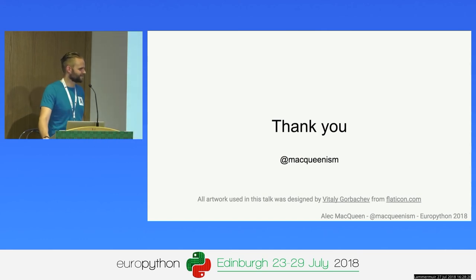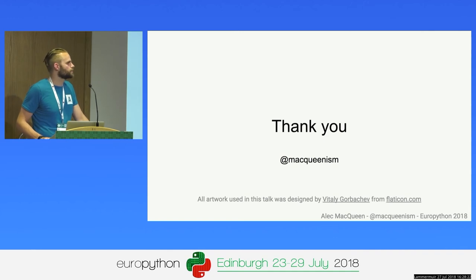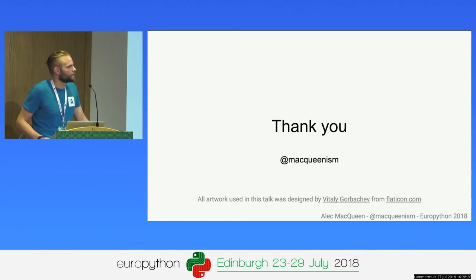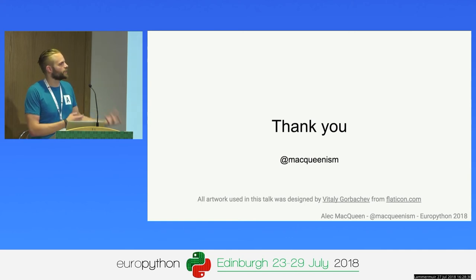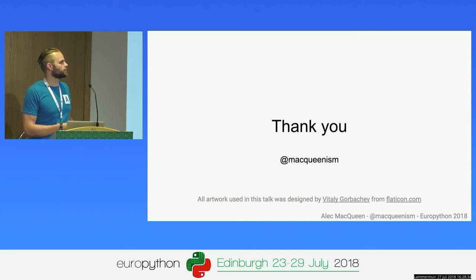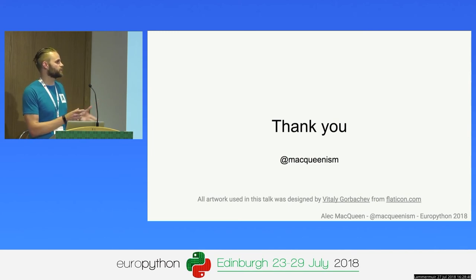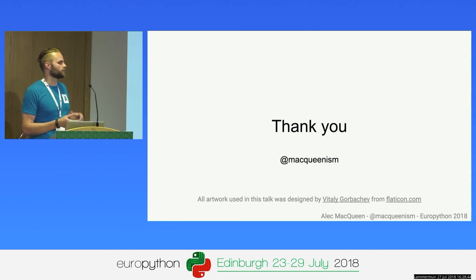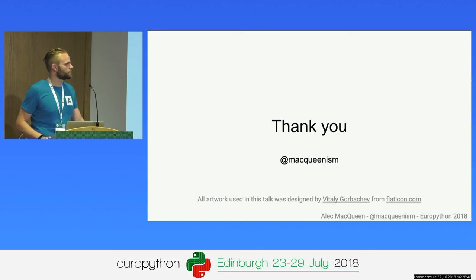Question: You said that documentation is easier with GraphQL — is that just because you generate it from the schema? Yes, it generates from the schema and it can tell you what types are in it. But there's also the ability to add your own documentation, which I didn't show — you can provide documentation as you're writing the types as well. So GraphQL takes you part of the way and then you can add your own as well.